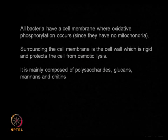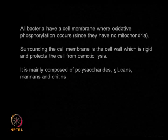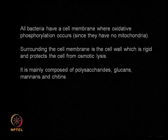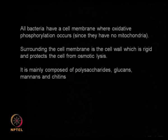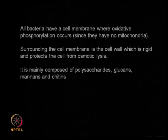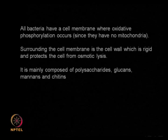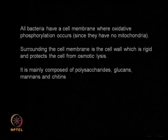Surrounding the cell membrane there is a cell wall which is rigid and protects the cell from osmotic lysis. The cell wall contains polysaccharides, glucans, mannans, and chitins — a mixture of different molecular weights of these products. The gram positive cell wall is made up of a thick peptidoglycan layer, whereas gram negative has an additional outer membrane, which is the major barrier in that bacterium.